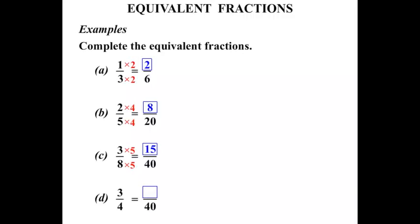3 quarters equals something over 40. Looking at the denominator, 4 has turned into 40 by multiplying by 10. That's right. So we times 10, timesing 10 on the bottom, we times 10 on the top as well. And 3 times 10 is 30.